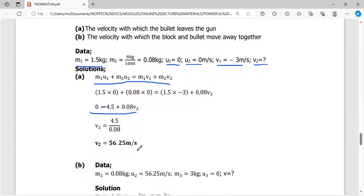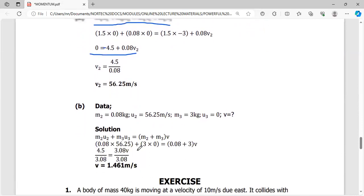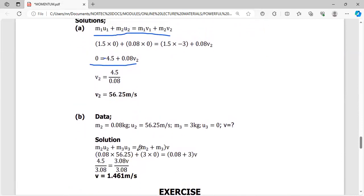Let's move on from scenario one. Scenario two is part B, which asks: with what velocity will the block and bullet, the two as a unit, move away together? This means we're talking about an inelastic collision. To avoid confusion, write its own data. M2, the bullet, is 0.08 kg. M3, the block, is 3 kg. The bullet is initially running at 56.25 m/s—the velocity before it hits the target. The initial velocity of the block is 0. The final common velocity we don't know.